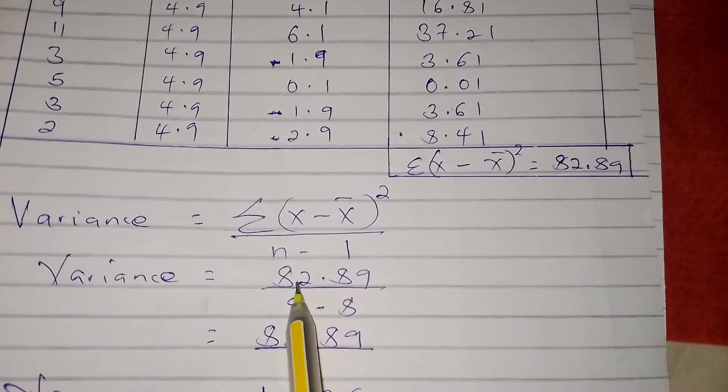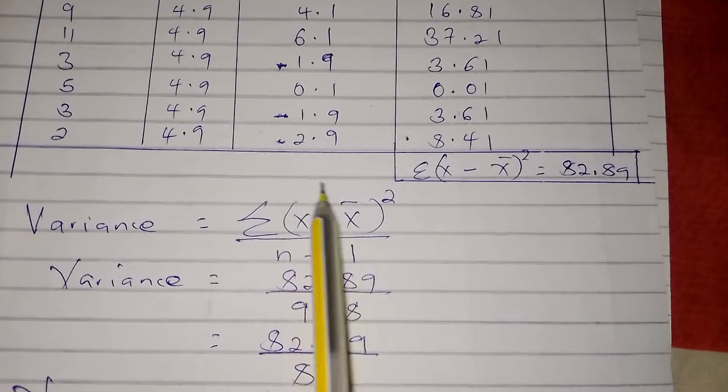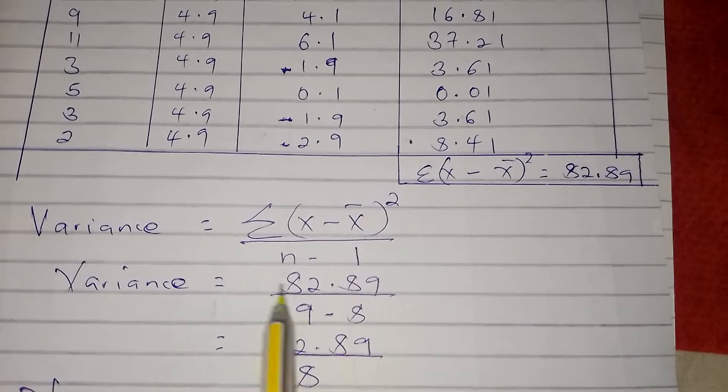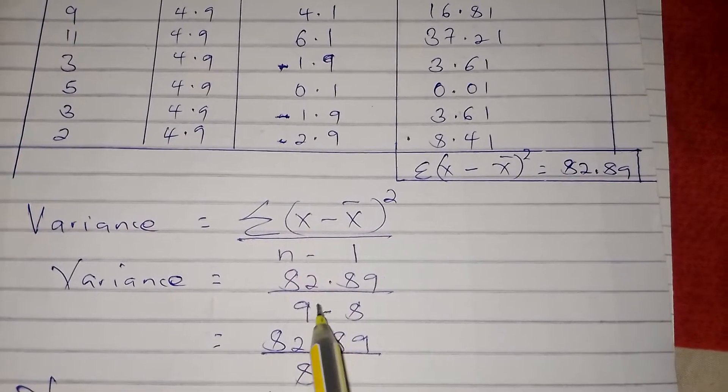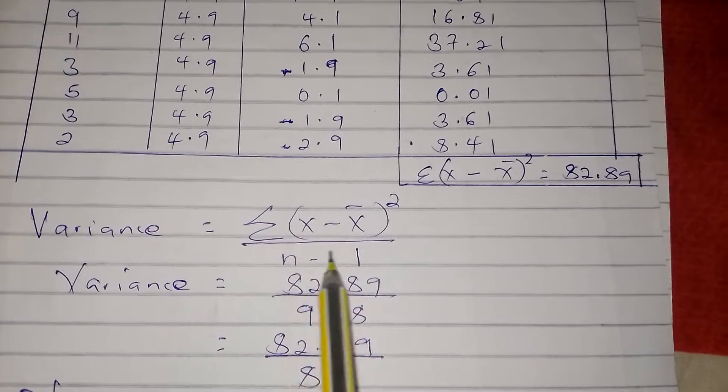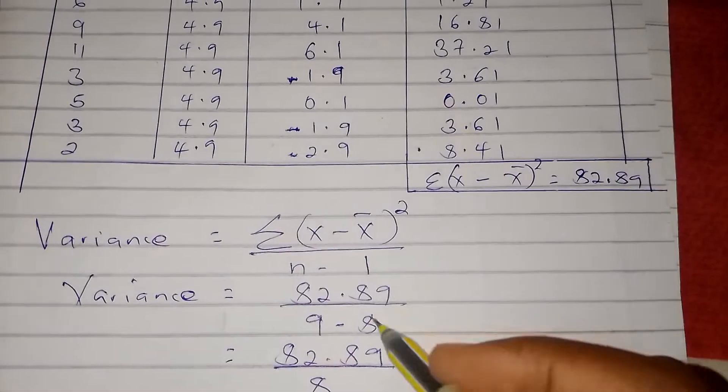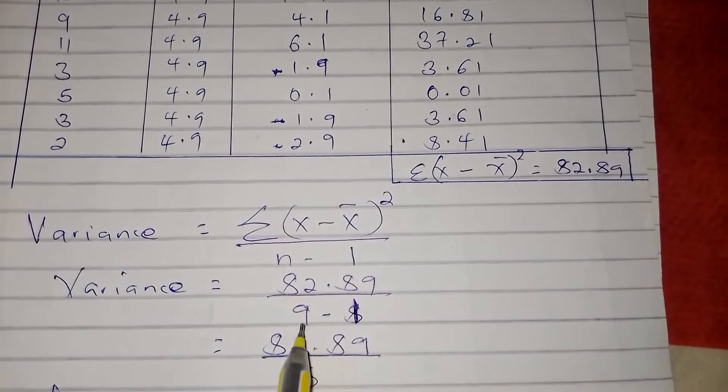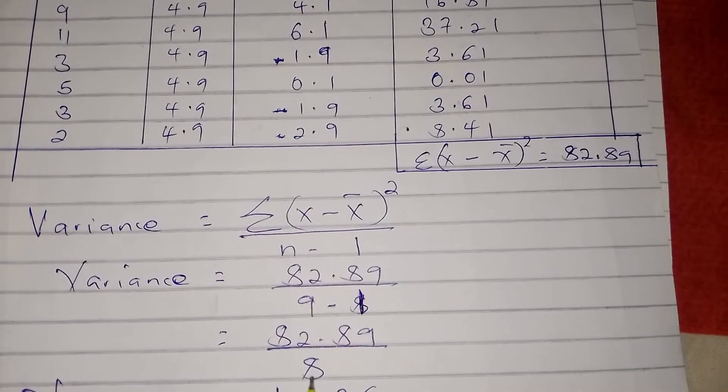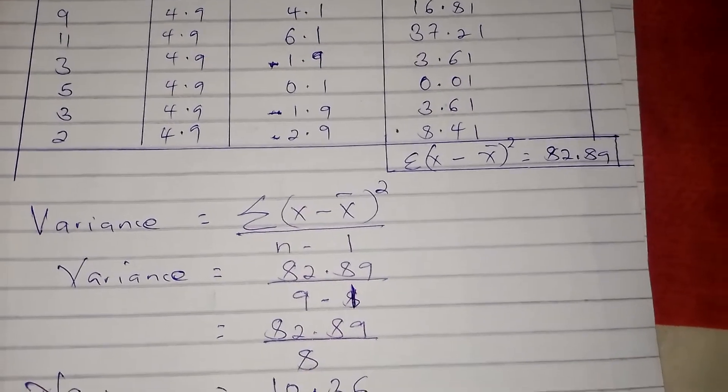n is the number of observations: 1, 2, 3, 4, 5, 6, 7, 8, 9. So we substitute, and our n is 9, then n - 1 = 9 - 1 = 8.